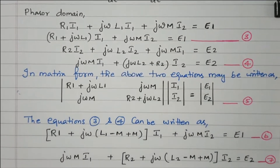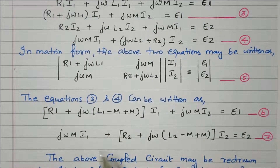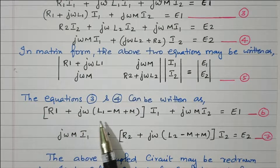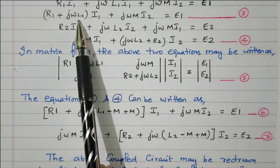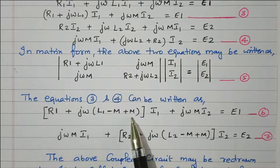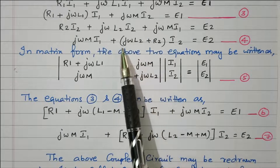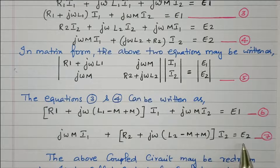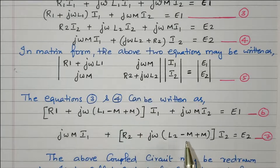Equations 3 and 4 can be written in another format. We add and subtract M within the inductance terms without affecting the original values: in equation 3, L1 is written as (L1 − M) + M; similarly in equation 4, L2 is written as (L2 − M) + M. So now the terms (L1 − M), M, and (L2 − M) appear, and based on this we can redraw the circuit.